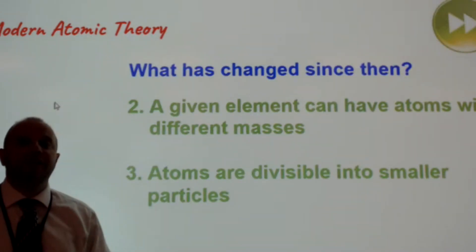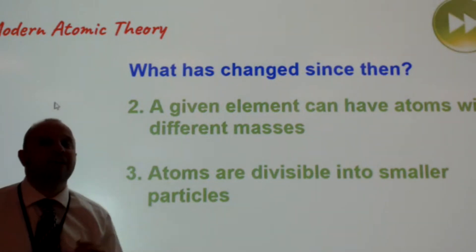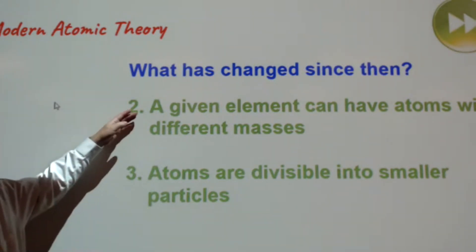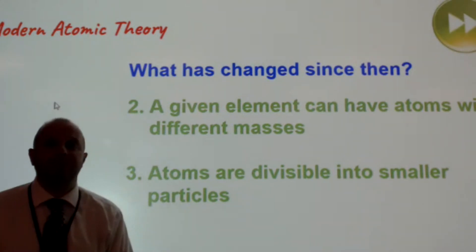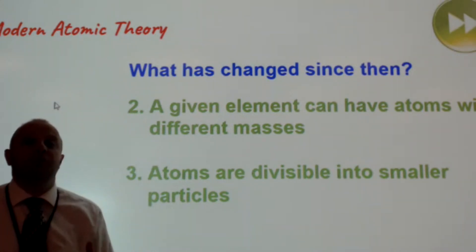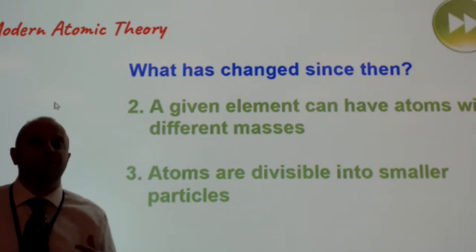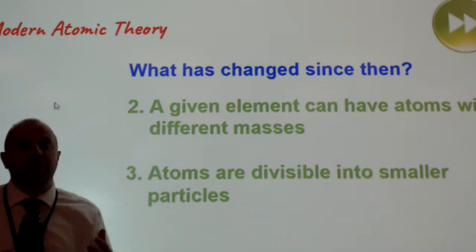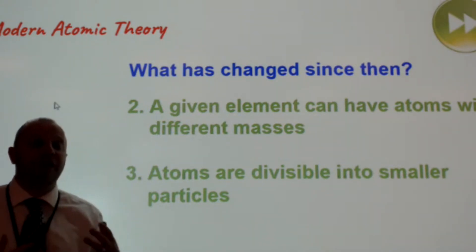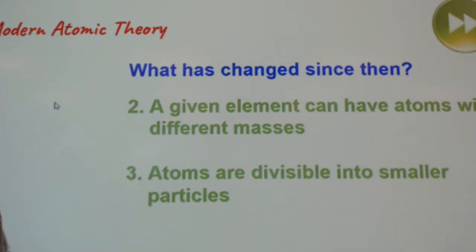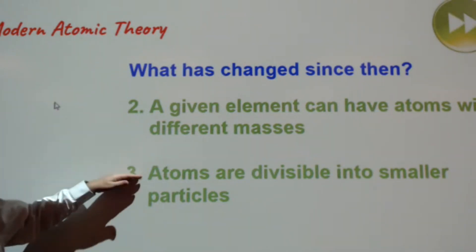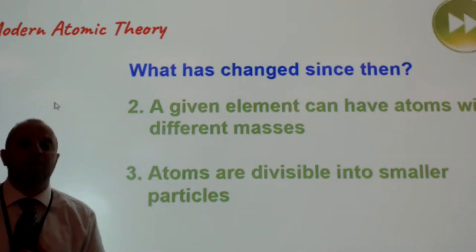So a few things have changed since 1805 to 1810. And the first thing that's changed is we now know that a given element can have atoms with different masses. We're going to come to learn that that is called an isotope. So two atoms that have different numbers of neutrons would end up with different masses. Very similar in properties most of the time, but they can actually have different masses. And number three out of the five, atoms are in fact divisible into smaller particles and we can create and destroy atoms. And we now know that because that's how we're discovering our new atoms. We're actually taking existing atoms, kind of colliding them together.